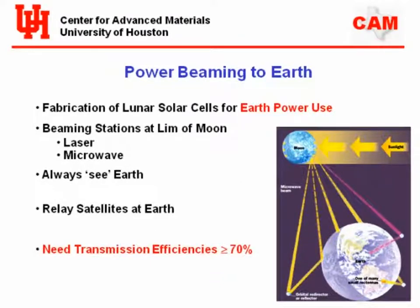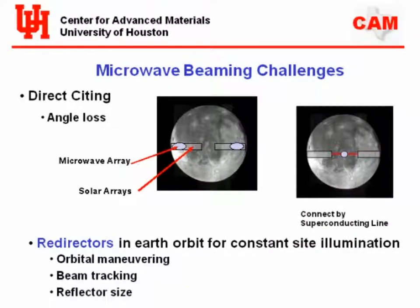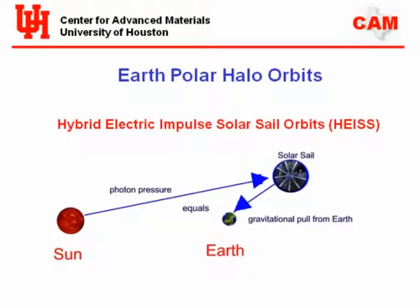For the beaming you'd have to have arrays with microarrays on the front side of the Moon and a retrodirector or redirector to beam to all parts of the Earth. We've discussed HEIS orbits — hybrid electric impulse solar sail orbits — where the reflector or transmitter acts like a solar sail, balancing solar sail pressure with gravitational pull for stable polar orbits. With orbits around the poles you can reach most regions of the Earth.